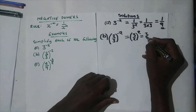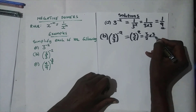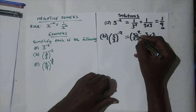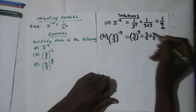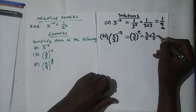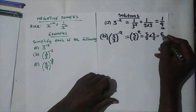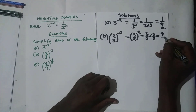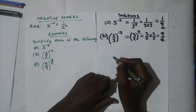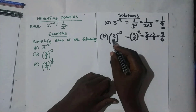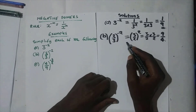This gives us three over two to the power two, which is three over two times three over two. So we have three times three, which is nine, over two times two, which is four. The answer is nine over four.